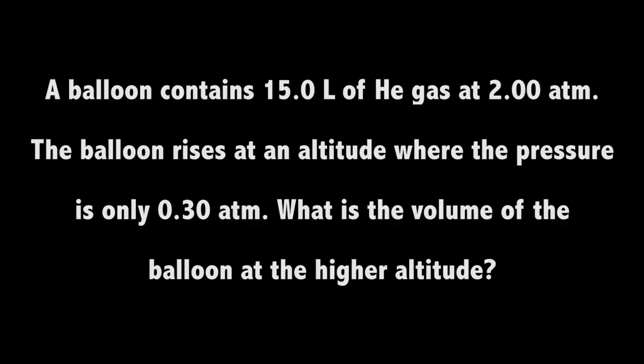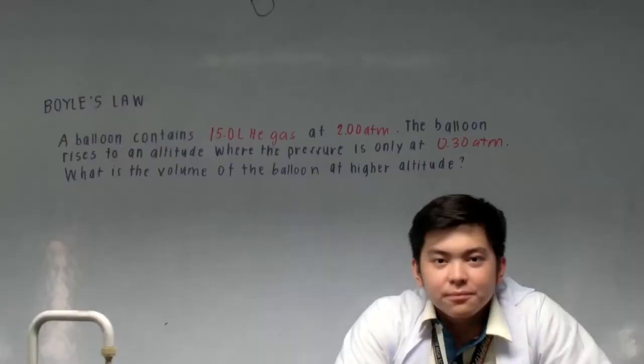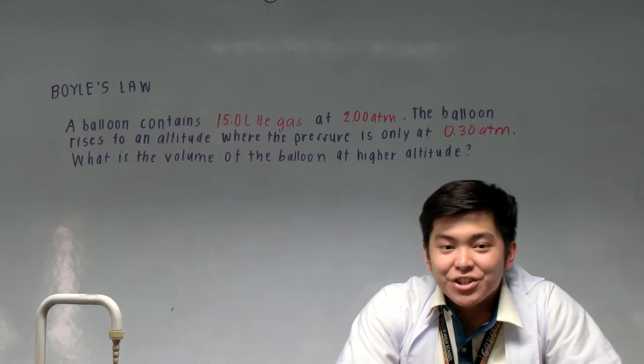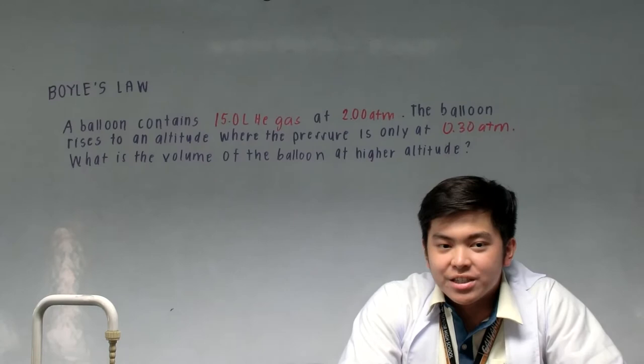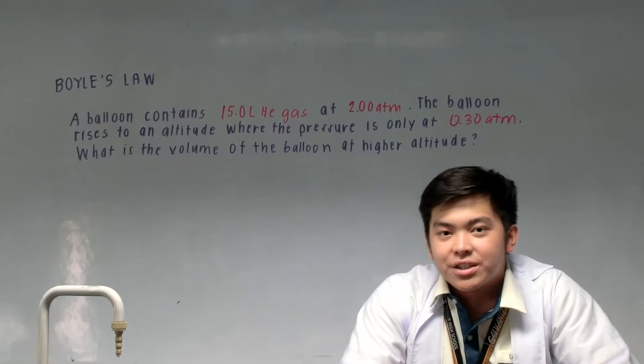Here's an example problem. A balloon contains 15 liters of helium gas at 2.00 atm. The balloon rises to an altitude where the pressure is only 0.30 atm. What is the volume of the balloon at the higher altitude? Helium is lighter than air, which causes it to rise. As altitude increases, the pressure decreases. Boyle's Law states that volume increases as pressure decreases. Therefore, the value of volume at the specific altitude must be greater than 15.0 liters.